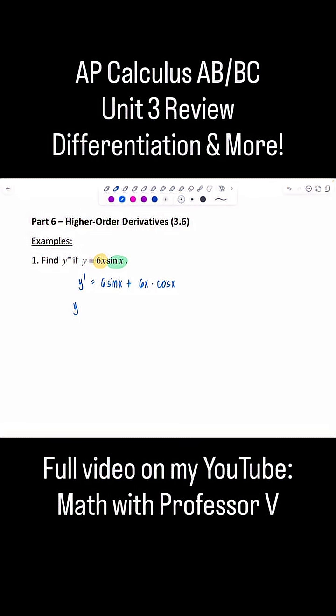Y double prime. Derivative of 6 sine x is 6 cosine x, plus product rule again. So derivative of 6x is 6, leave cosine x alone, plus now leave 6x alone. Derivative of cosine x is negative sine x. So now clean this up.